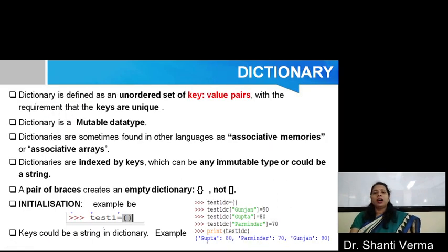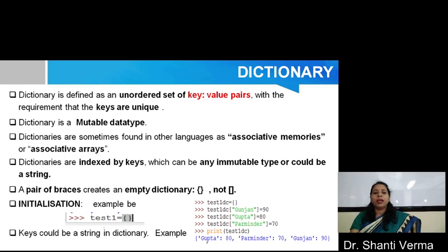Now, let's discuss dictionary. Basically, dictionary is defined as an unordered set of key and value pairs with the requirement that the keys are unique. Basically, dictionary is also a mutable data type, meaning you can change the items after creating a dictionary. Dictionaries are sometimes also called associative memories or associative arrays. Dictionaries are indexed by keys, which can be any immutable type or could be a string. A pair of curly braces creates an empty dictionary. So for list you use square brackets, but for dictionary you use curly braces.